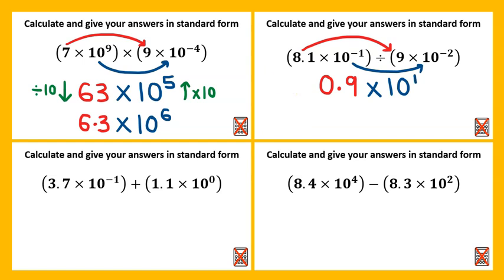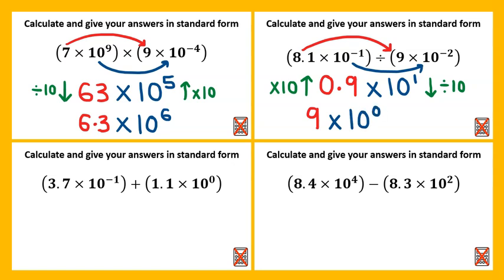This will then need to be amended. To change this to a number between one and ten, we would need to multiply this number by ten, and therefore we would need to divide the power by ten. This would be nine multiplied by ten to the power of zero. Ten to the power of zero is one, so nine multiplied by one would just give us nine.